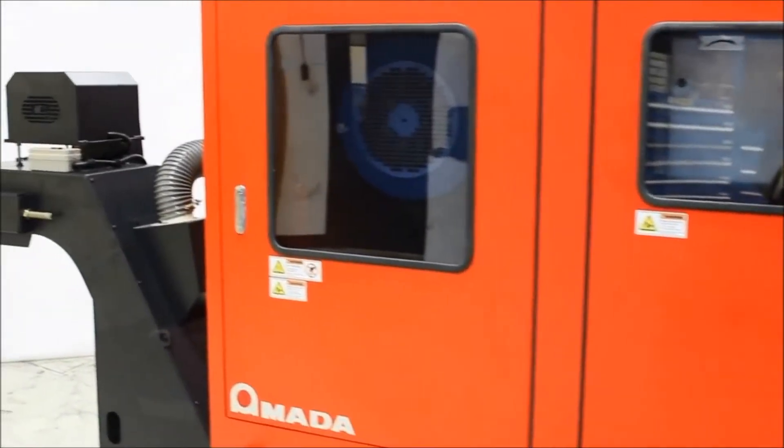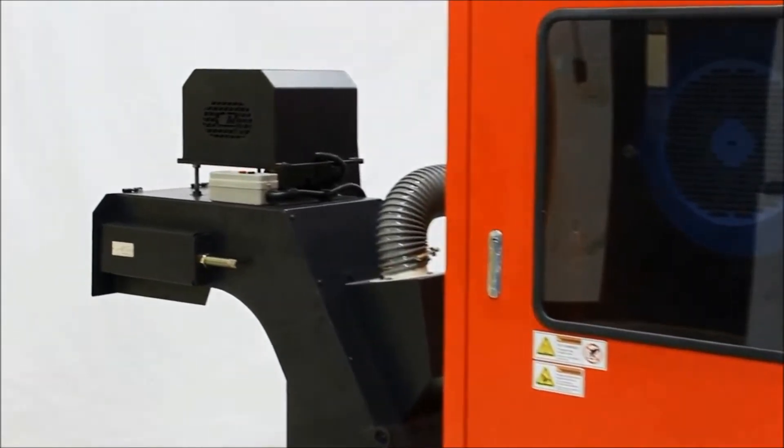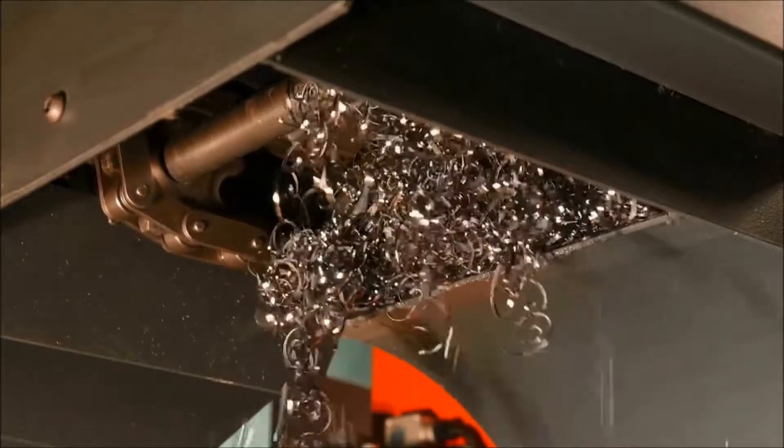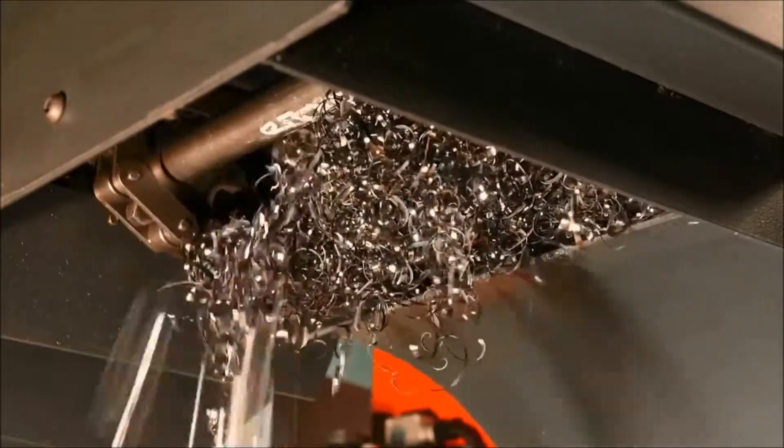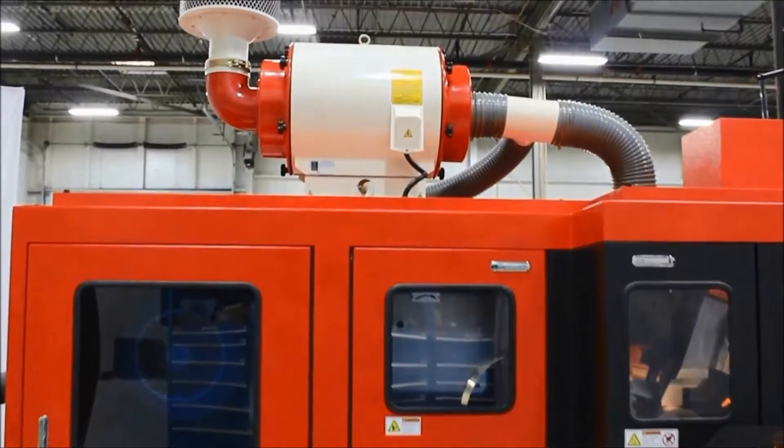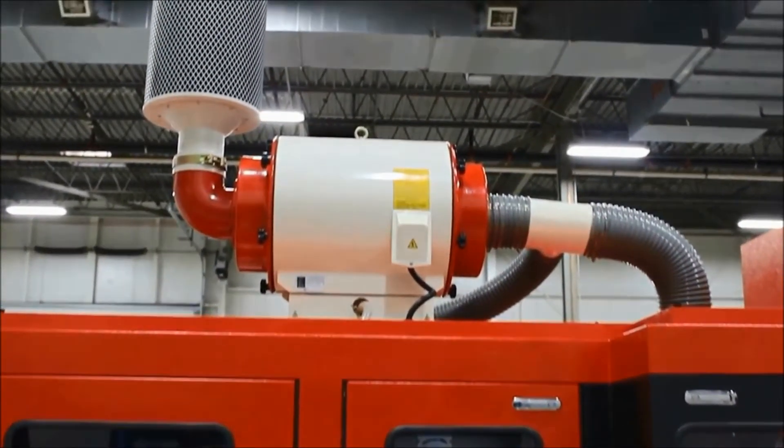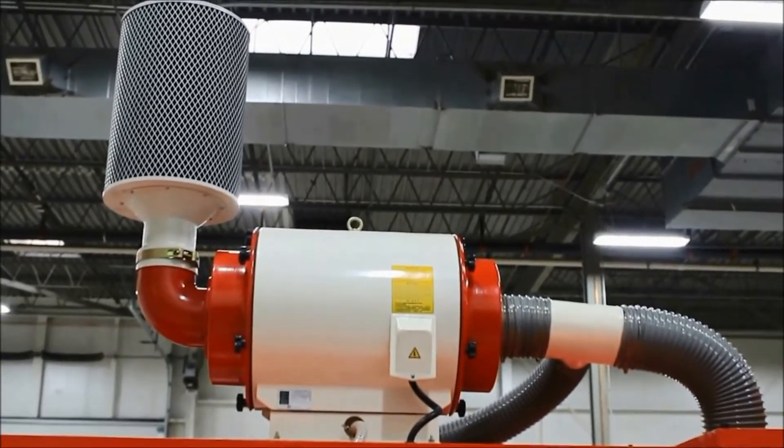The chip conveyor automatically pulls the chips out of the machine to maximize machine uptime by eliminating the need to stop the machine to remove chips. A mist collection system removes oil mist to keep the air free of pollution and the work area free of contamination.